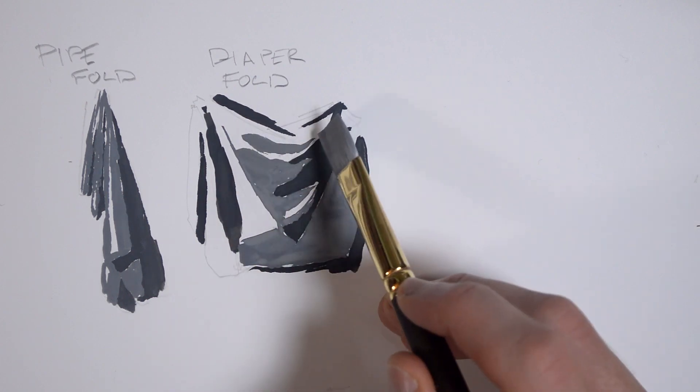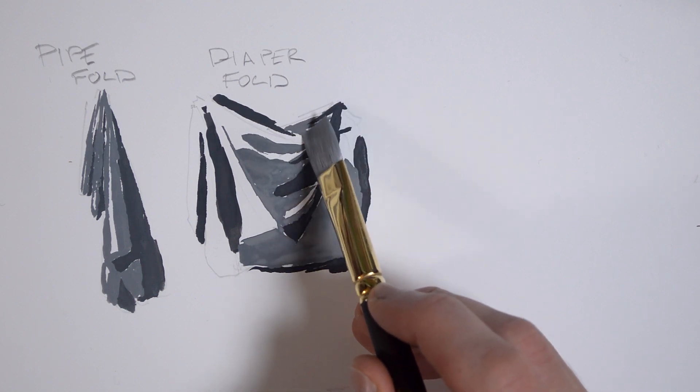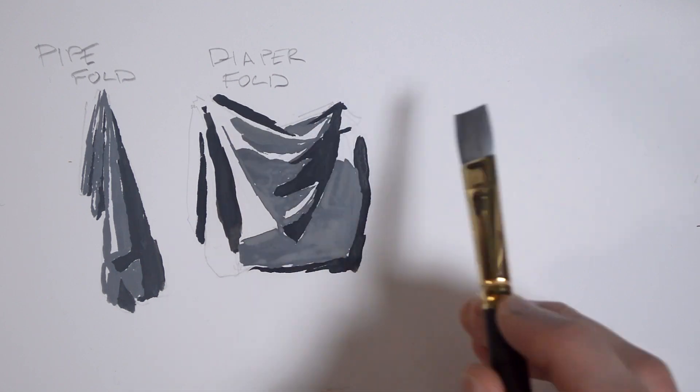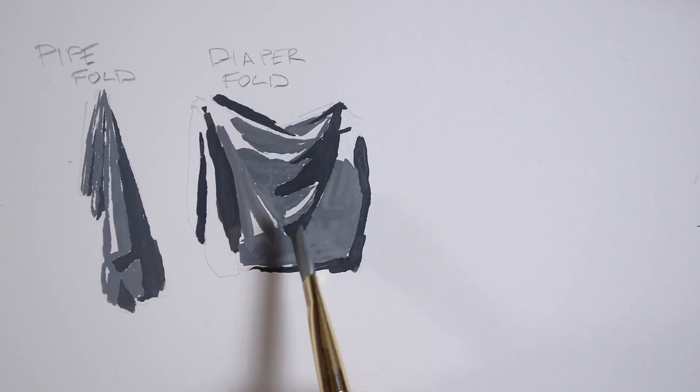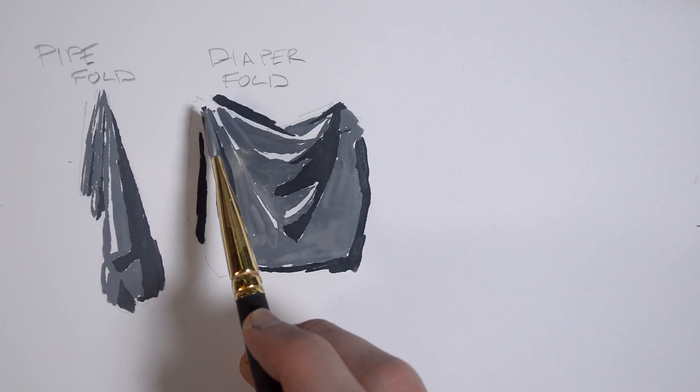Because we're simplifying these, the most important aspect of conveying the folds accurately is the shadow shapes. Actually, even if we were spending 10 hours on this, the shadow shapes would still be the most important part. I've probably mentioned the importance of the two value light dark foundation in every video.